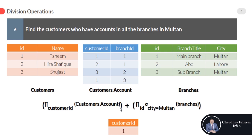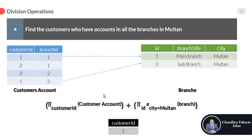Then by using the division operation we are going to produce the result. Only the customer with id 1 has accounts in all the branches in Multan. Customer id 1 is linked to branch id 1 (main branch Multan) and branch id 3 (sub branch Multan). No other record satisfies the condition of having accounts in all branches in Multan.